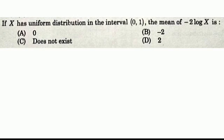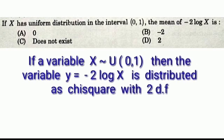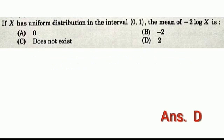Question 13: If x has a uniform distribution on the interval (0,1), the mean of −2 log x — Options: A: 0, B: −2, C: does not exist, D: 2. Answer: Option D, 2.